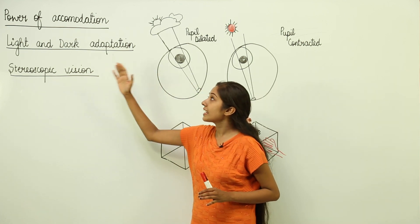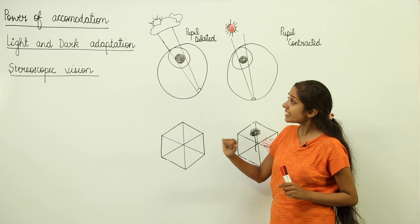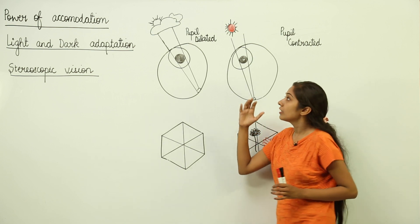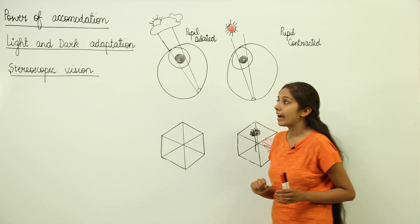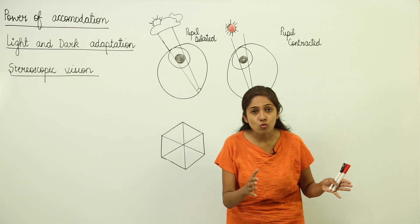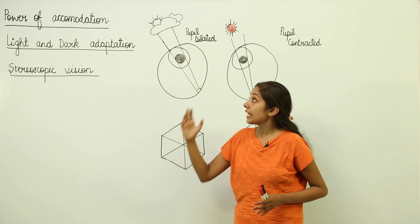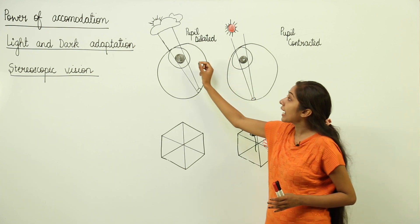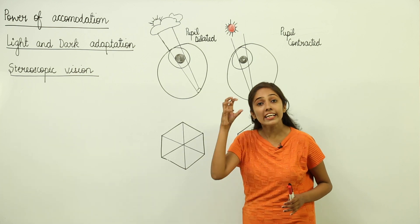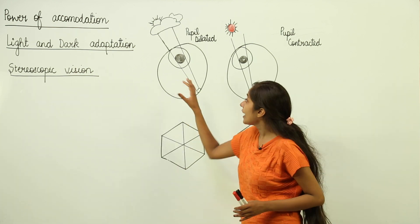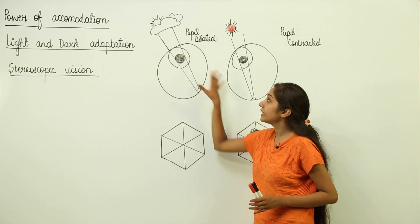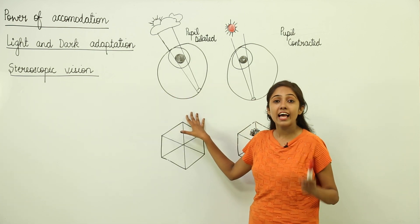Your eyes also have light and dark adaptation. When you go from a brighter room to a darker room, your pupil is going to dilate so that more and more light can enter into your eyes and you can see the objects in the darker room. This is known as light adaptation.